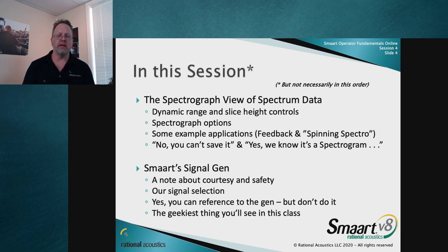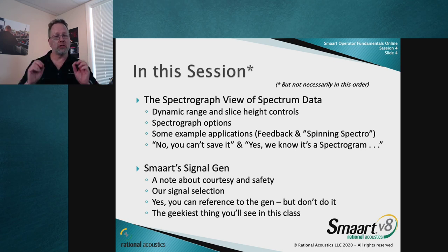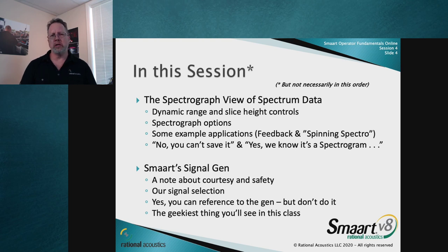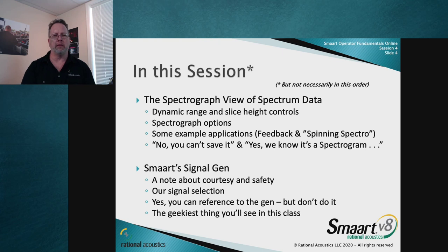A note about courtesy and safety: the signal generator making noise is one of the only places where we can really hurt somebody or at least startle somebody. Don't just turn your noise on at a random level — bring your noise in low and bring it up, and notify everybody. One of the keys about your noise source is being able to mute it quickly. I like using the generator in SMAART because I can just hit the G button to silence it.